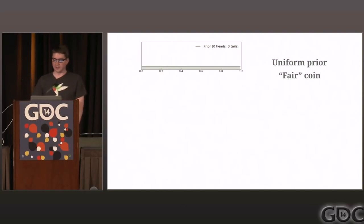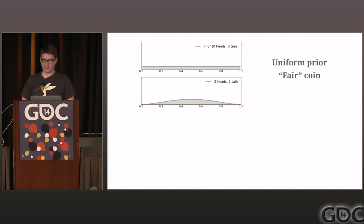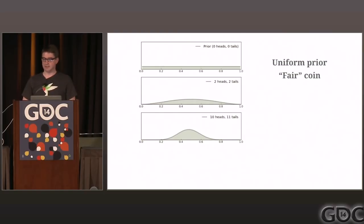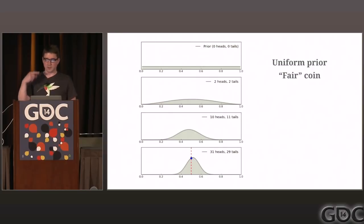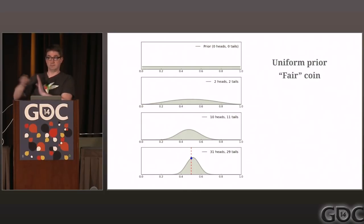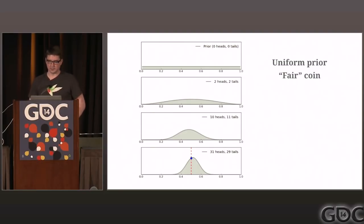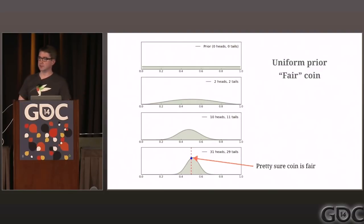Plugging this into an actual experiment: we start with a uniform prior — no prior knowledge at all about this coin — and the coin is actually fair, with theta at 0.5. We start flipping: two heads, two tails; ten heads, eleven tails; thirty-one heads, twenty-nine tails. As we go, we're increasing our certainty that the coin looks fair. The dotted line represents 0.5. Even though it's centered at 0.5, we're still allowing for the possibility we might not have seen all examples of the coin's behavior — it could be 0.6 or 0.7. But as we see more data, that tightness increases and we get more confident about the spread of the true distribution.